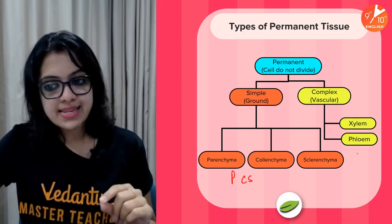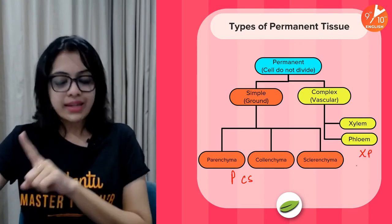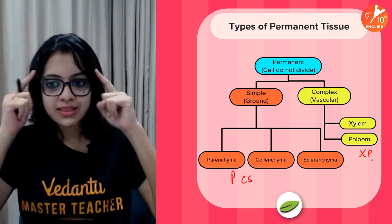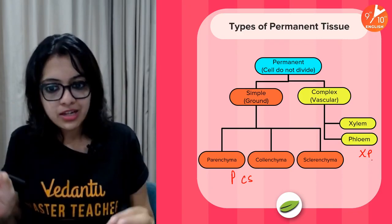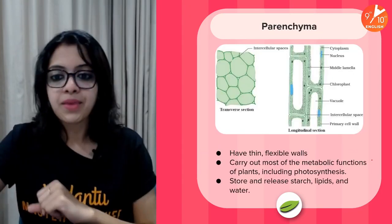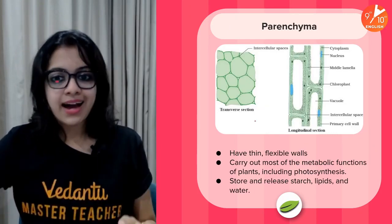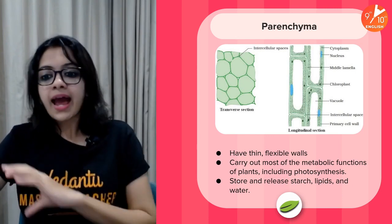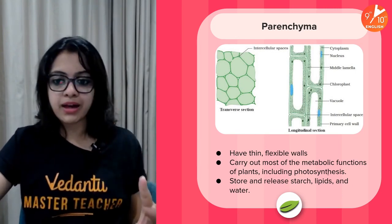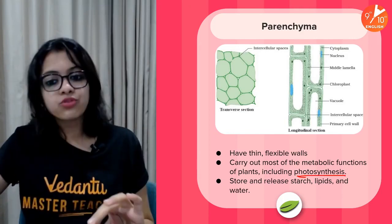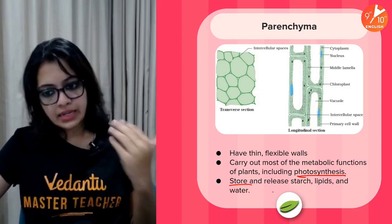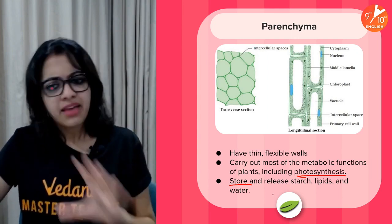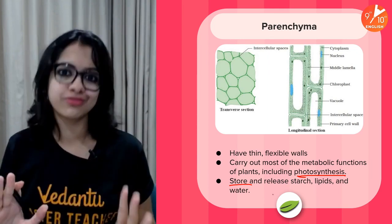Always remember the abbreviations: PCS for the simple tissues and XP for the complex ones. Starting with parenchyma — these are very simple permanent tissues with thin and flexible walls. They carry out many metabolic functions including photosynthesis and are also involved in storage of lipids, excess starch, or water.